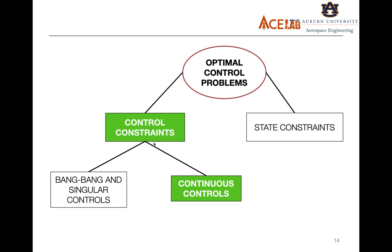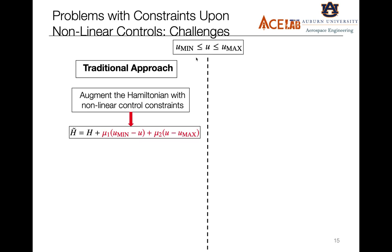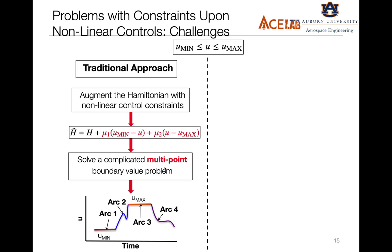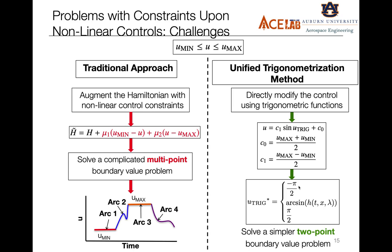Moving on to the second class of problems, where there are constraints on the controls and the controls appear in a continuous or non-linear form. Using the traditional approach, you augment the Hamiltonian with constraint conditions and extra multipliers, making the problem formulation more complicated with a multi-point boundary value problem. Instead, you map the control from U to U-trick, making it implicitly bounded. In this case you get three solutions, and you again use Pontryagin's minimum principle to determine whether it's minimum, maximum, or in-between, then simply solve for a two-point boundary value problem — much simpler.